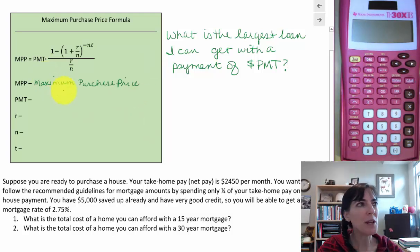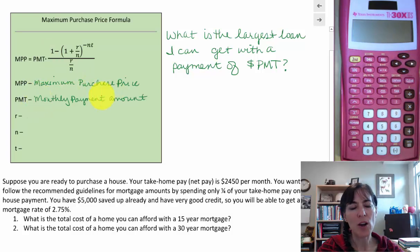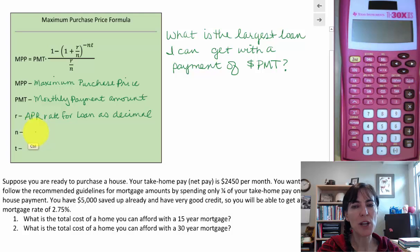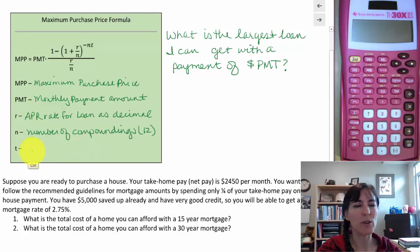The PMT is still the amount of the monthly payment. The R is still the APR for the loan as a decimal. The N is the number of compounding periods and we will use 12. The T is the number of years for the term of the loan.